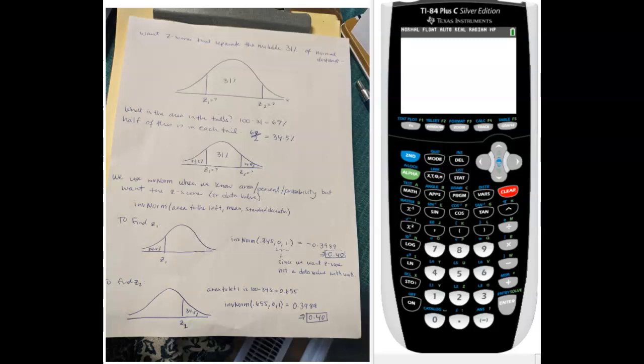Hello, so we're going to go through and answer this question. The problem wanted to know the z-scores that separated the middle 31% of the normal distribution. So here we have the normal curve, and here we have indicated the middle 31%, and we have z-scores on either side that are the boundary of this middle 31%.